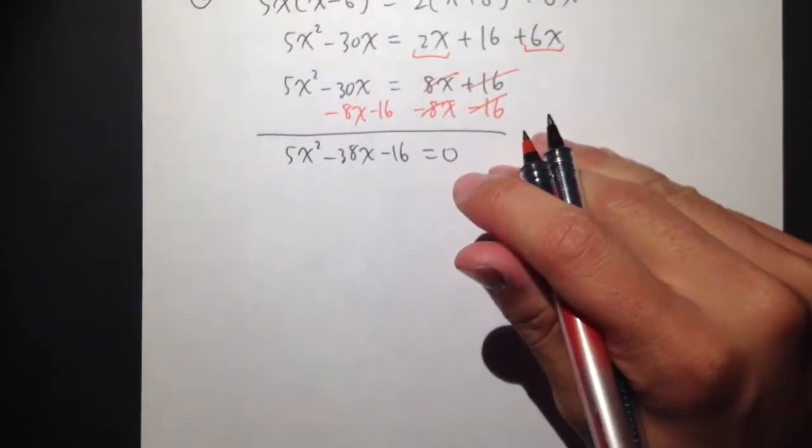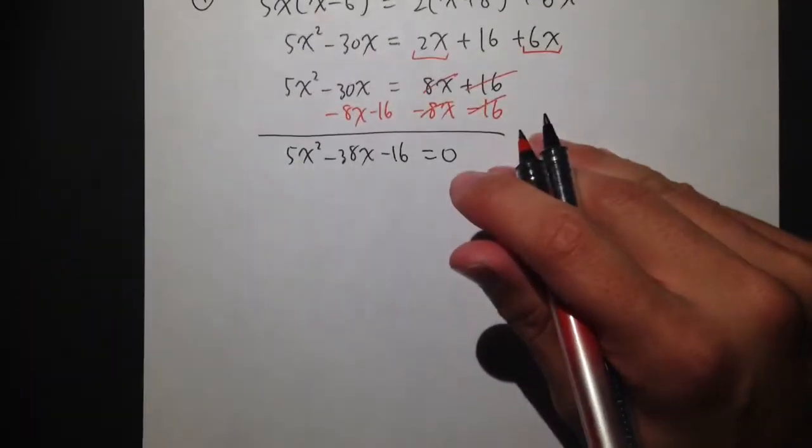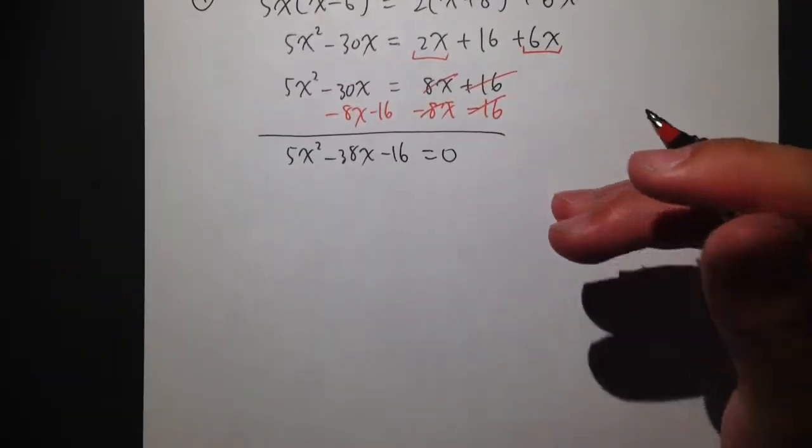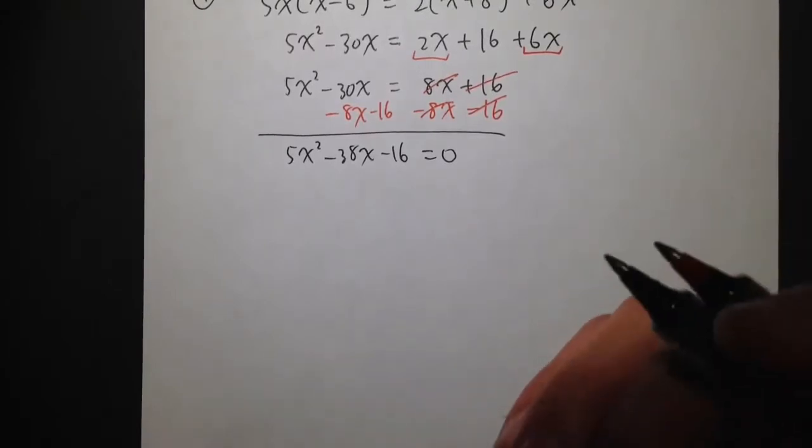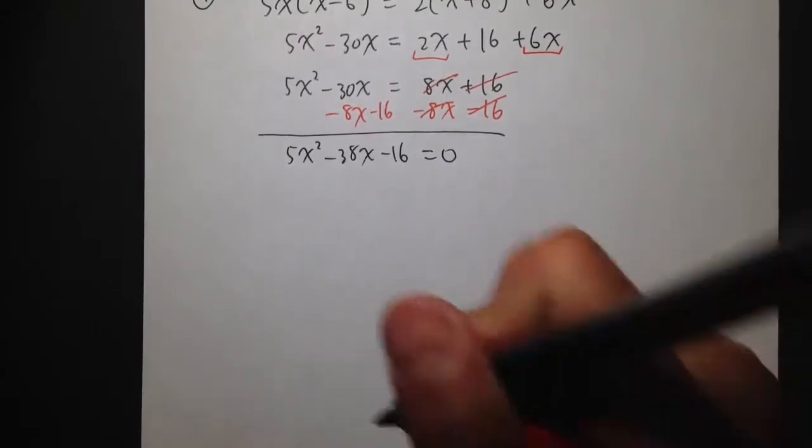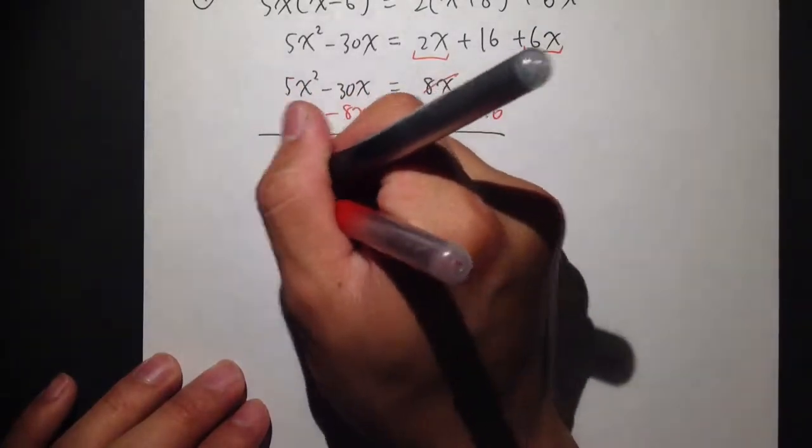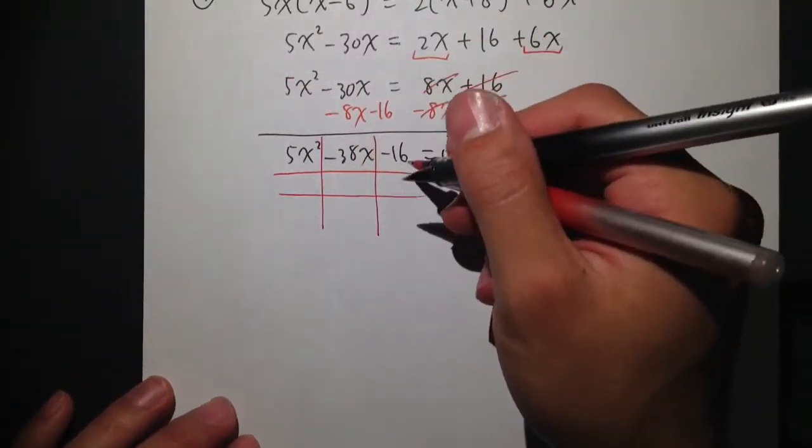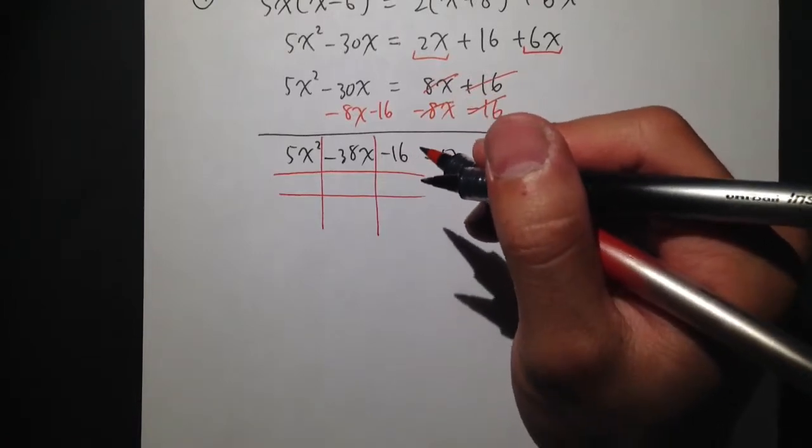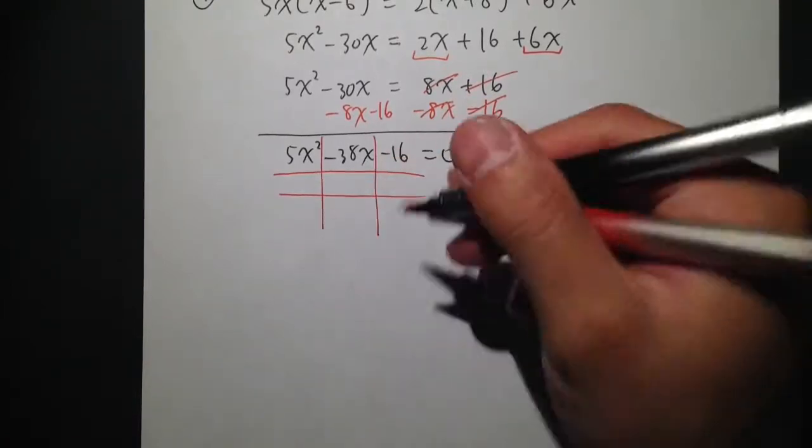So then let's see, I have 5x squared minus 38x minus 16 is equal to 0. And let's think about how can we factor this. Well, we may not be able to get this correctly the first try. Because 16 has a lot of factors. But we'll try. It will take us a few times maybe.